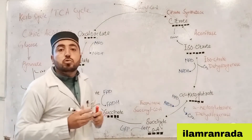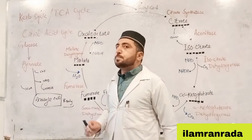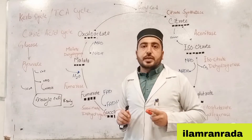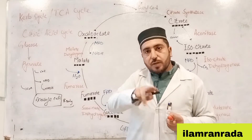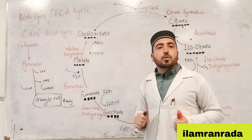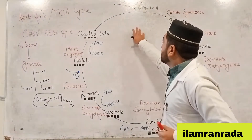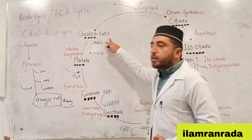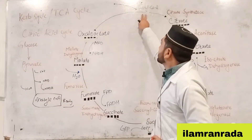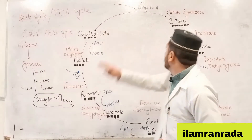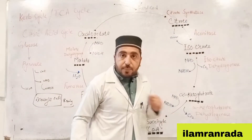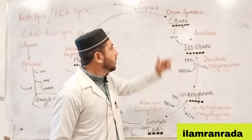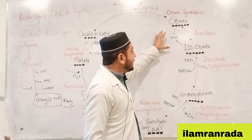Acetyl coenzyme A is now ready to enter the Krebs cycle. Students, glycolysis occurs in the cytoplasm, while the Krebs cycle takes place in the mitochondrial matrix. Acetyl CoA (two carbons) combines with oxaloacetate (four carbons) in a condensation reaction catalyzed by citrate synthase to form citrate (six carbons).